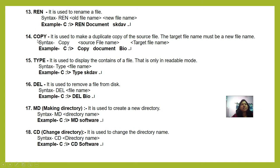Next is COPY. It is used to make a duplicate copy of the source file. The target filename must be a new filename. The syntax is: copy, then the source filename, then the target filename. The target filename must be a new file. For example, write 'copy document bio' — means your document file now has another copy with the name 'bio'.